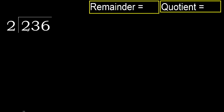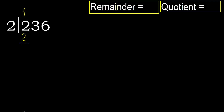236 divided by 2. 2 is not less, therefore with 2: 2 multiplied by which number is nearest to 2 but not greater? 2 multiplied by 2 is 4, which is greater. 2 multiplied by 1 is 2, which is not greater.